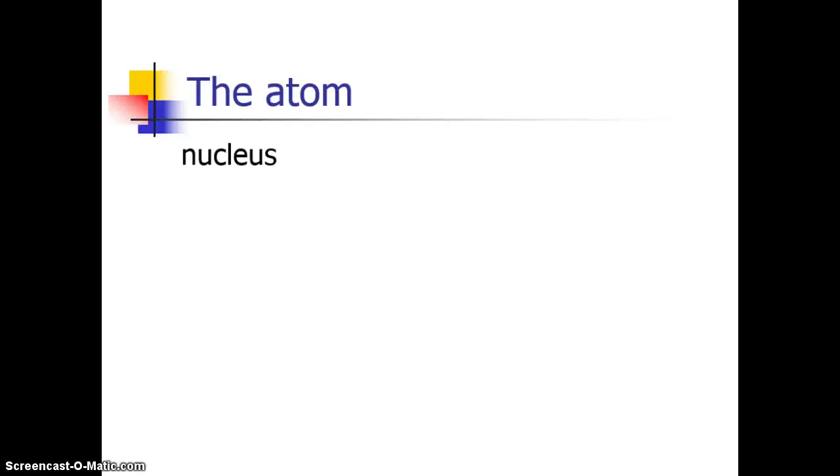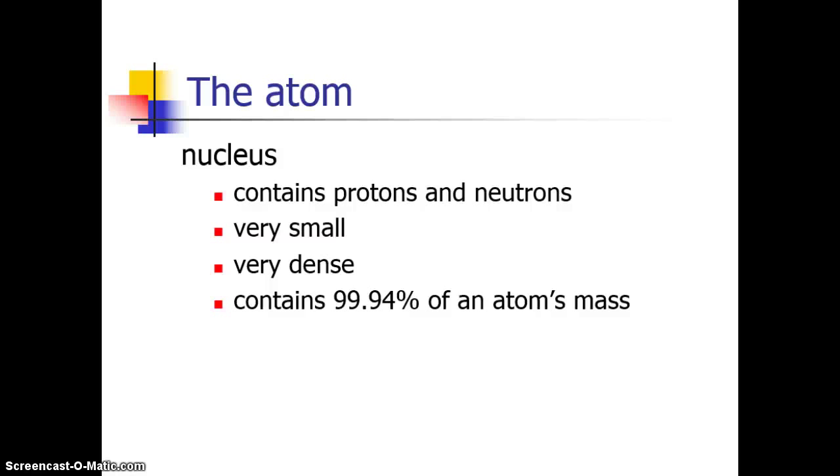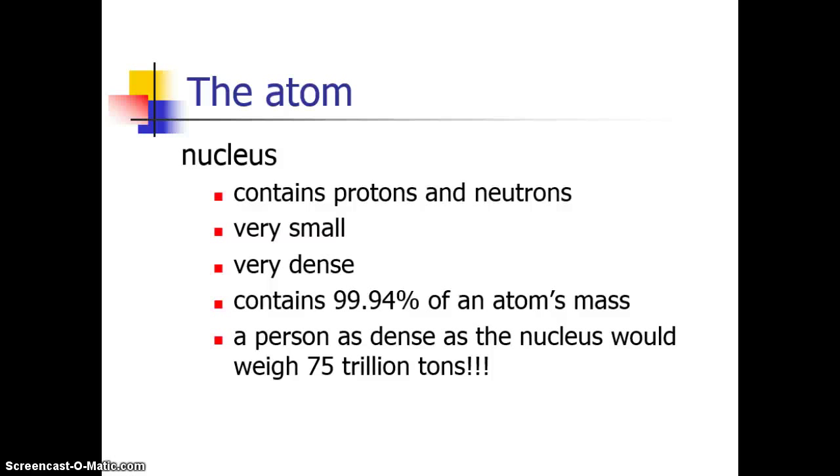So let's think about the nucleus. That contains the protons and neutrons, like we just said. It is very, very small. It is also very dense. It contains almost the entire mass of the atom. If you were as dense as just a nucleus, you'd weigh about 75 trillion tons. That's the weight you would be if you were as dense as the nucleus. So why are you not that dense? Because atoms are mostly empty space, and that means you are too.